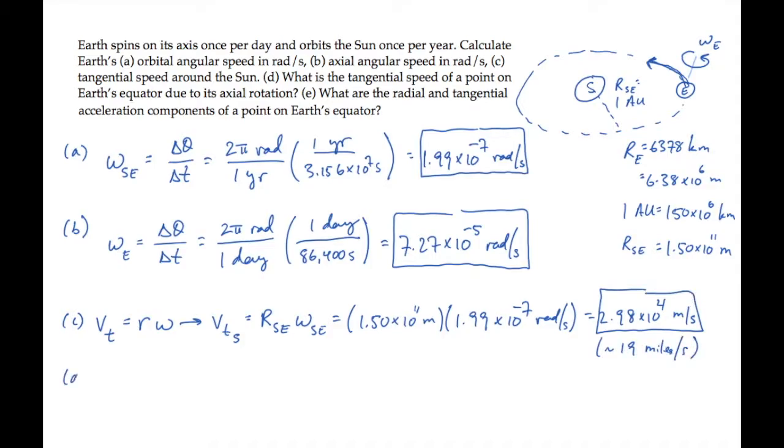Part D asks for the tangential speed of a point on the Earth's equator due to its rotation around its own axis. So we use the same equation, applying it to the Earth's rotation. So we have radius of the Earth times omega sub e, the angular speed of the Earth around its own axis. And we substitute those values, calculating to find that speed is 464 meters per second. That's how fast a point on the equator is moving. That works out to less than a third of a mile each second.